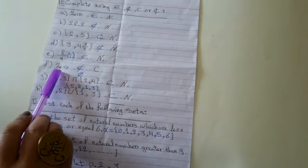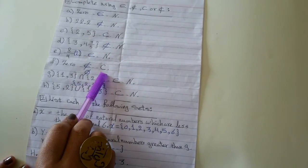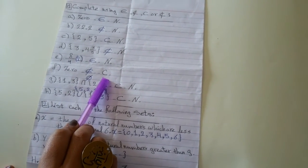Zero, not element to counting numbers because we start counting with number 1.